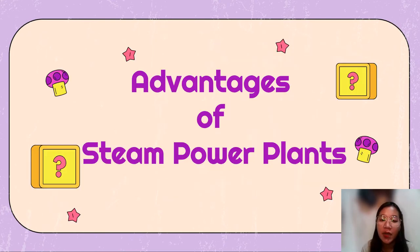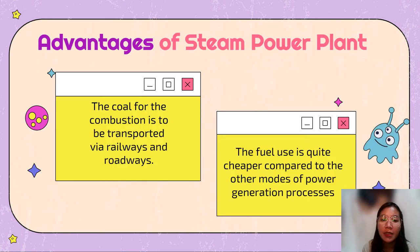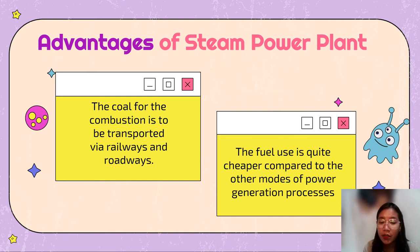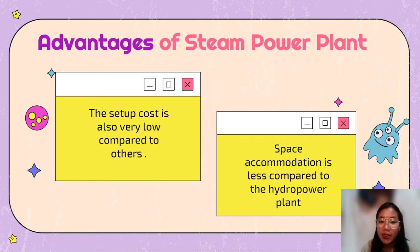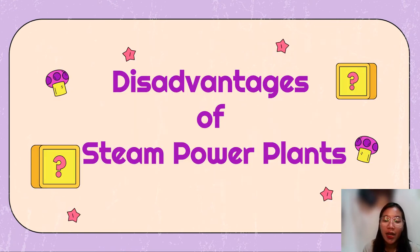The advantages of the steam power plant are: first, the coal for combustion can be transported via railways and roadways. Second, the fuel used is quite cheaper compared to other modes of power generation. Third, the setup cost is also very low compared to others. Fourth, the space accommodation required is less compared to a hydropower plant.